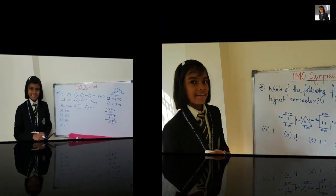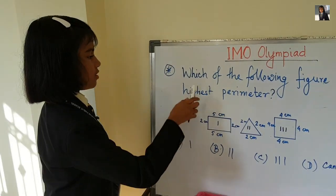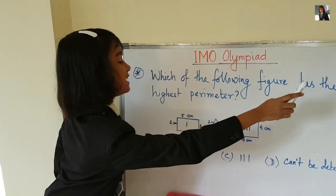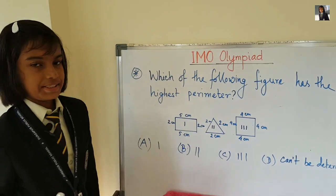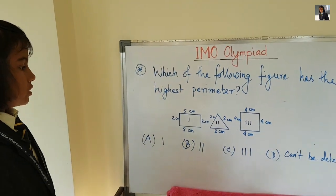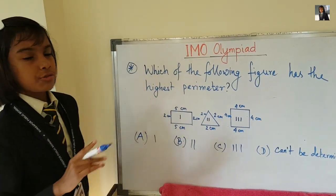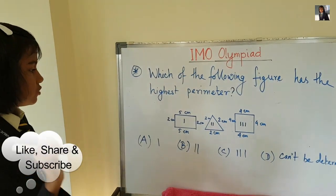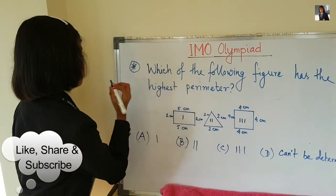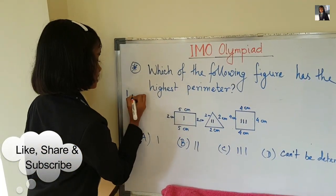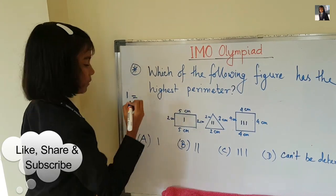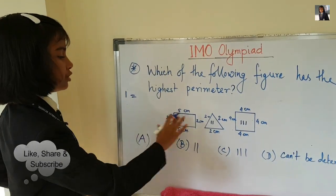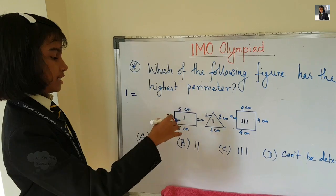Now let's do this question: which of the following figures has the highest perimeter? There are three figures and we have to find the figure with the highest perimeter. Let's add the sides of each figure. For the first figure: 5 + 5 = 10, and 2 + 2 = 4, so 10 + 4 = 14.